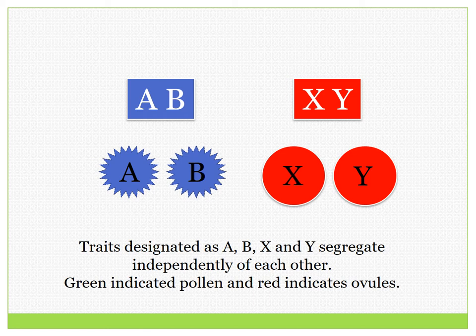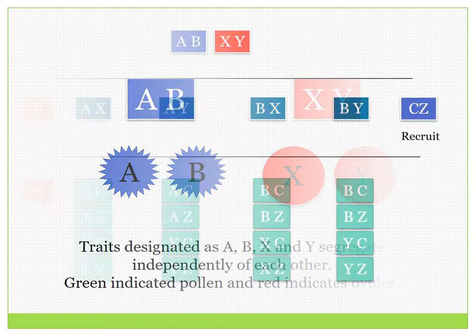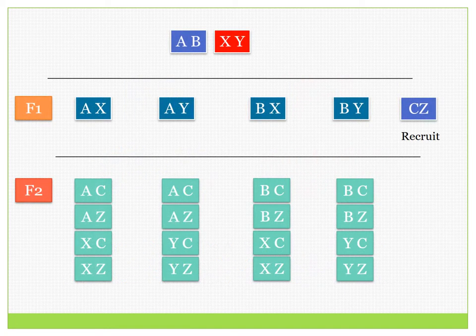Loci A and B in blue, and X and Y in red, segregate independently of each other, resulting in a typical Mendelian inheritance pattern. In order to develop novel varieties, wild types known as recruits are hybridized to the F1 population. The F2 population is a result of the crossover between the recruit and individuals within the F1 population, which increases the number of varieties and leads to the development of new hybrids.